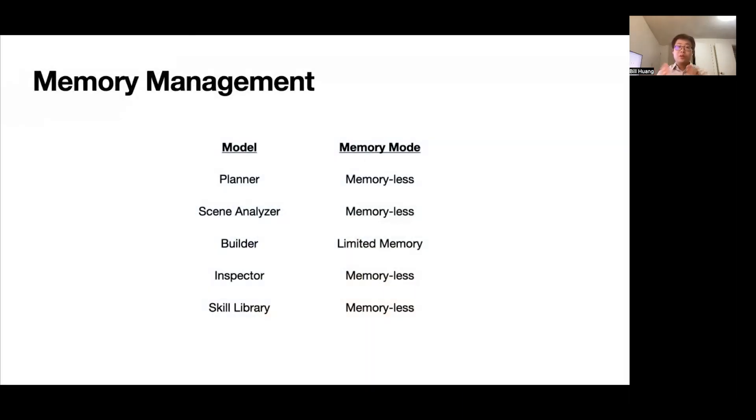We have also developed so-called memory management. All the modules in the framework are large language models, and by default, the language models will remember everything that has happened before, basically all the historical interactions, and then it will generate the text conditional on those historical information. We have found, however, that that mode, which we called full memory, is not ideal for our application. The main constraint is token size limits. So to make our framework more scalable, we have actually limited the memories of almost all the modules in our framework, and we found that this makes the model both perform better and is also more scalable.